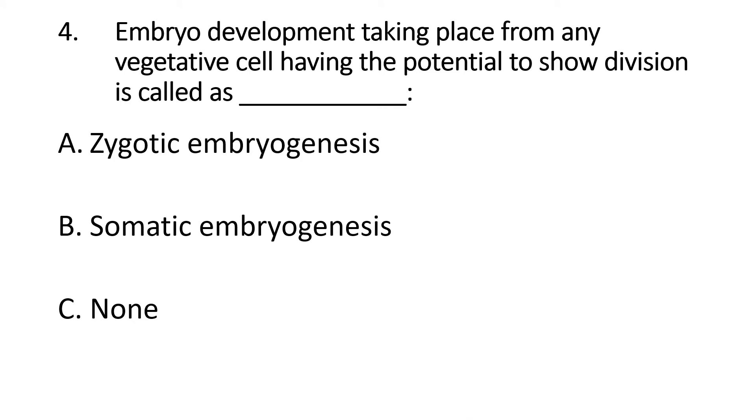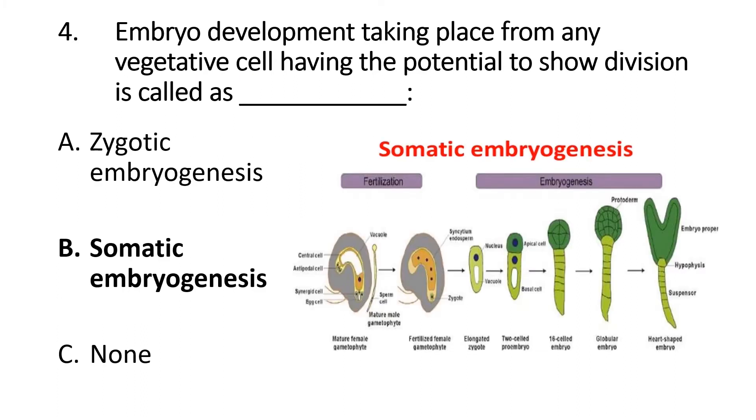Embryo development takes place from any vegetative cell having the potential to show division is called. The right answer is beta, somatic embryogenesis.